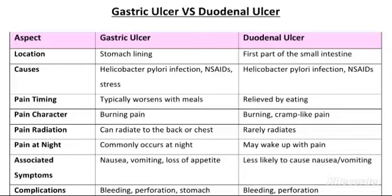Hello everyone, welcome to my channel. Aaj hum learn karenge difference between gastric ulcer and duodenal ulcer. Gastric is related to stomach, and ulcer is a sore in the lining of the stomach. Duodenal means the first part of the small intestine, and ulcer means a sore on the lining of the duodenum.